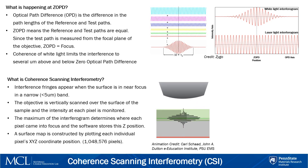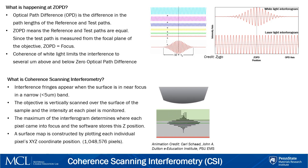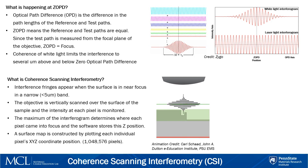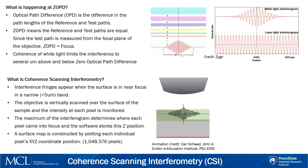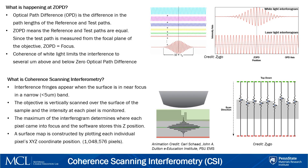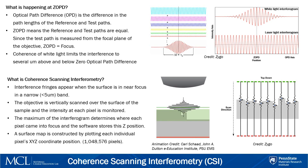The objective lens is vertically scanned across the surface of the sample, and the intensity at each pixel is recorded for each height. The maximum intensity of the interferogram determines the point at which the test path and the reference path lengths are equal — or ZOPD. By calculating this point for every pixel in our camera, a surface map can be generated, resulting in an image with 1,048,576 pixels.